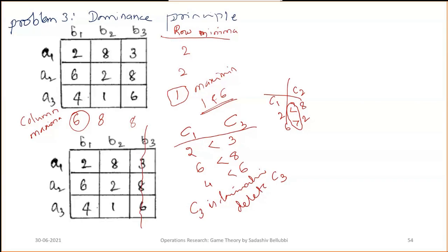Now compare the first row and second row. Here, 2 is less than 6 but 8 is greater than 2, so we cannot compare row 1 and row 2 — they cannot be eliminated against each other.